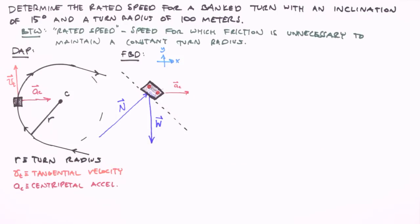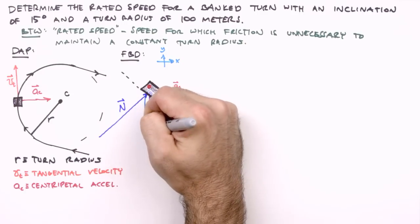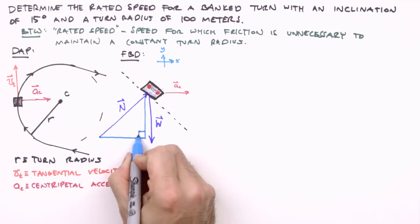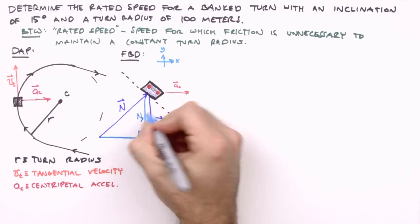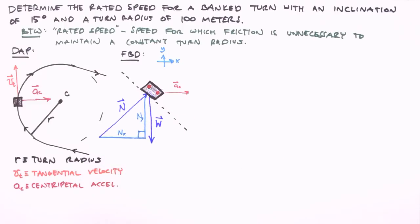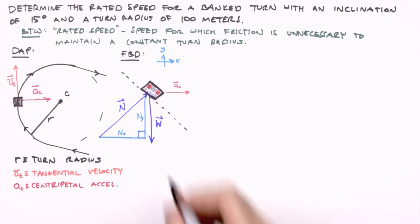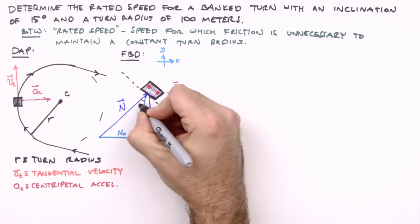Now that we've assigned a coordinate system to our free body diagram, we can break any oblique force vectors into their x and y components. So here's the y component of the normal force, and the x component of the normal force.